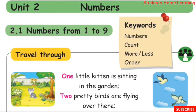Unit 2 Numbers — numbers from 1 to 9. Keywords: numbers, engel (count), ennudel (count), more, adikam, less, kuraivu, order, verisai.